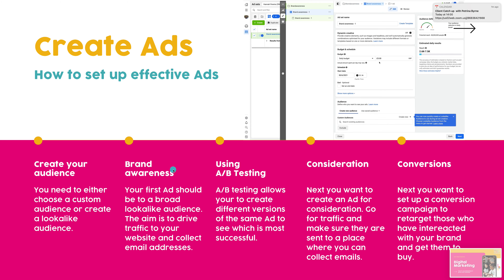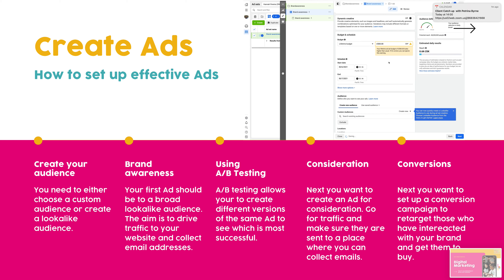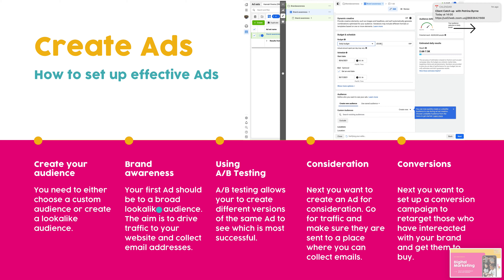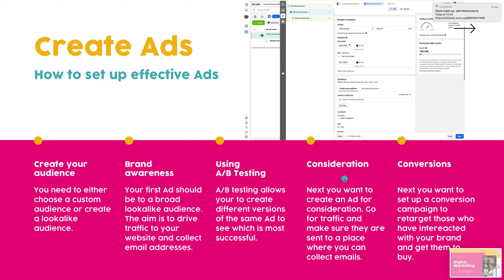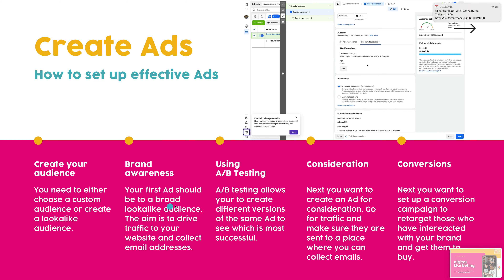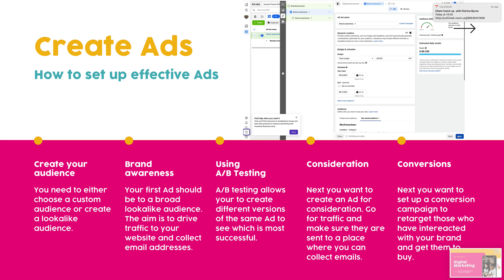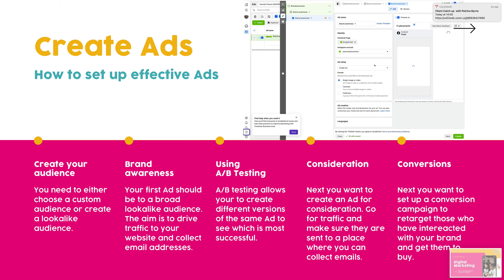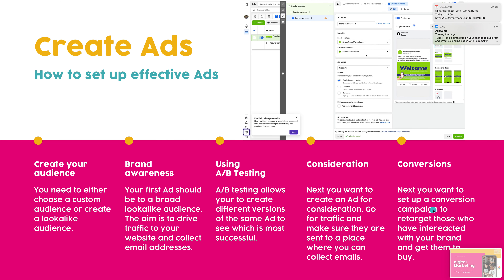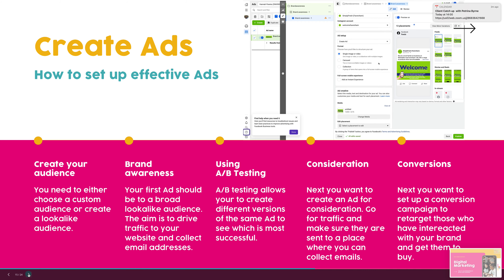There are three types of ads: Brand awareness — broad targeting to find out what audience to target and collect data on website visitors. Consideration — for traffic that has engaged with your brand but needs a little more information; make sure you're collecting email addresses and giving them a reason to share, such as 10% off or a free tool. Conversion — targeting people who have already been on your website and showing them a product they're likely to be interested in.